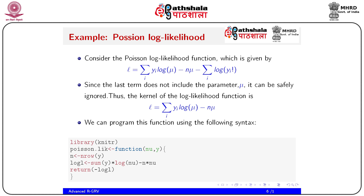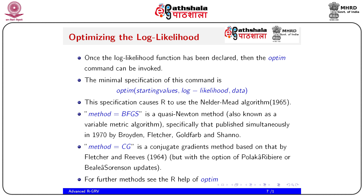We can implement this using the following syntax: load the required library, then define poisson.llik as a function of mu (the parameter) and y (the data). Inside, set n equal to the number of rows of y, compute log_l as sum(y * log(mu)) - n*mu, and return minus log_l. This gives you the negative log likelihood value, which is then used for optimization.